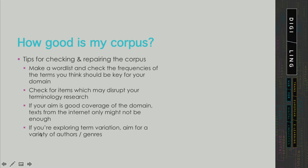Another thing is that if your aim is good coverage of the domain, you should consider other sources, not just the internet. The internet is usually skewed or biased — certain genres and text types simply don't occur on the internet as frequently as they should. On the other hand, if the goal of your project is to explore term variation, you should aim for a large variety — a broad range of different authors, genres, and text sources — so that your results will reflect the variety across the entire range.